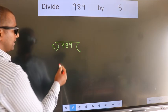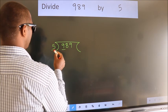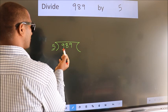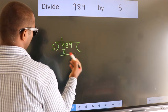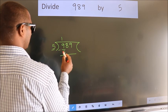Next, here we have 9, here 5. A number close to 9 in 5 table is 5 once 5. Now we should subtract. We get 4.